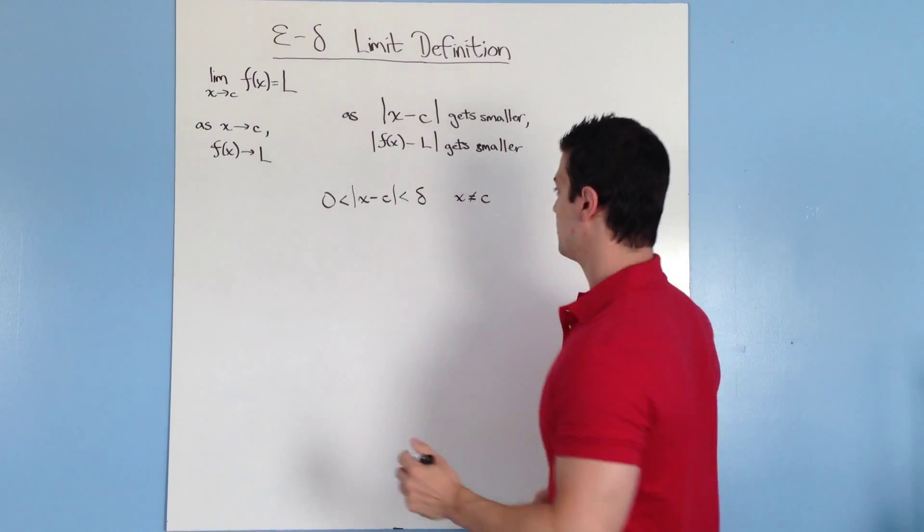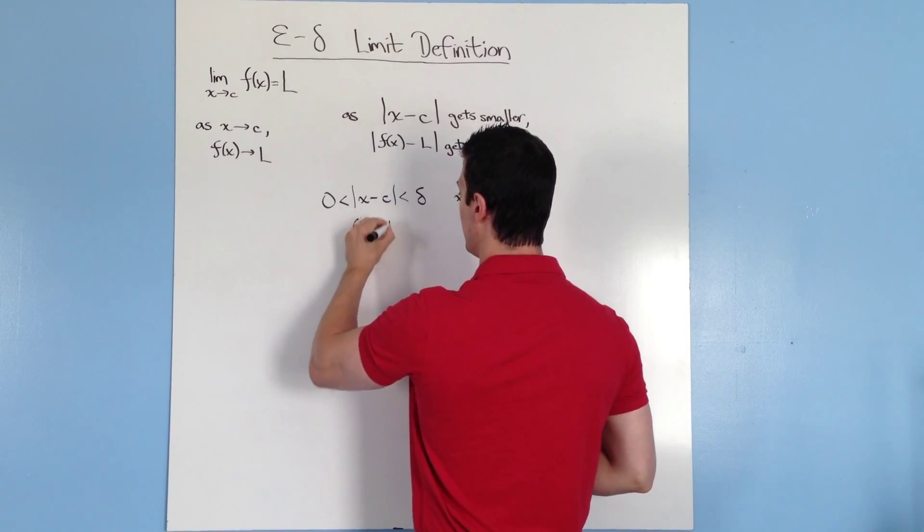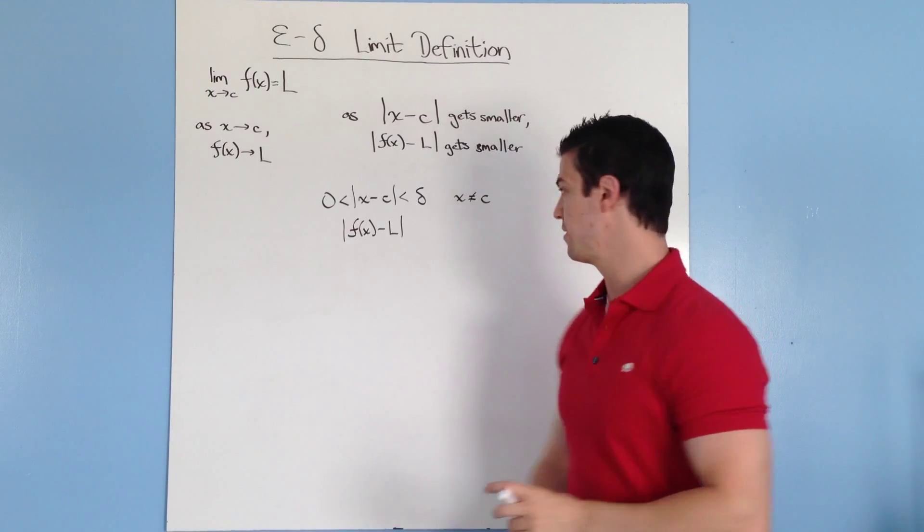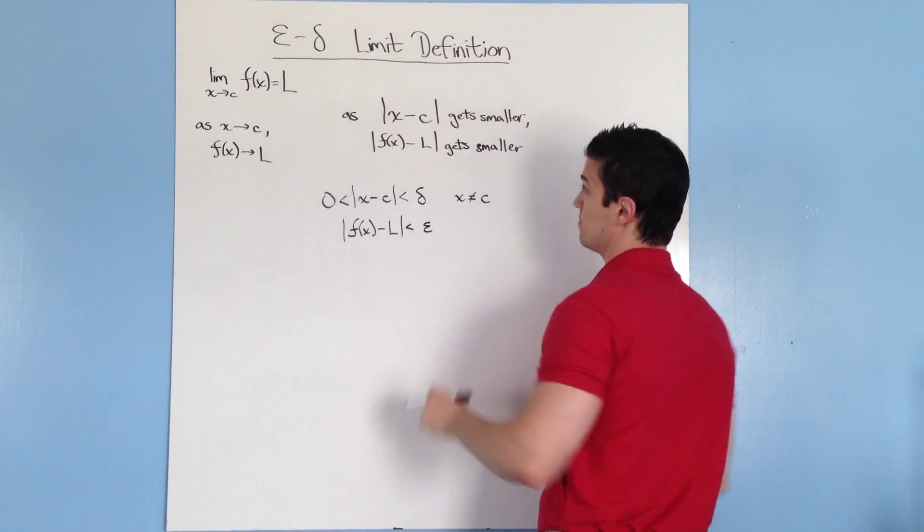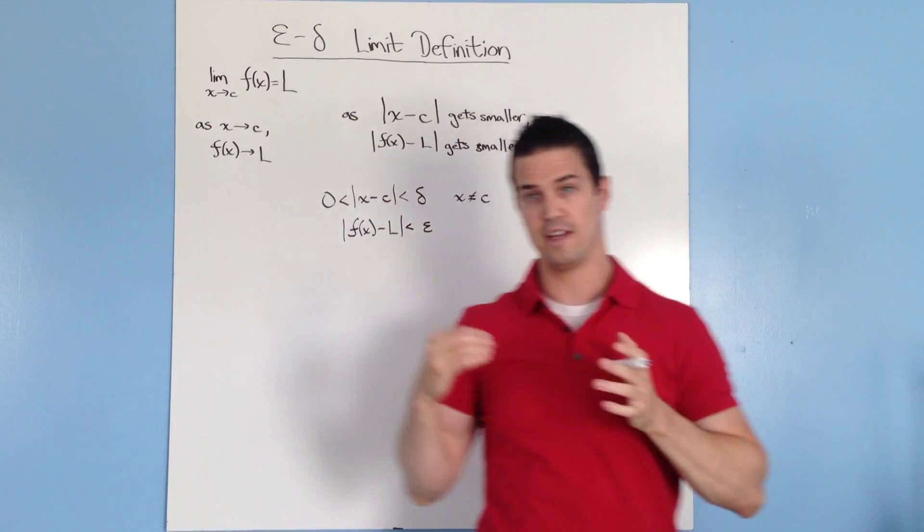So next, I'm going to do the same thing with this f of x and this l over here. So f of x minus l, remember this is how close these two values are to each other, has to be smaller than epsilon. So we're going to use this other variable right here. It has to be smaller than epsilon.